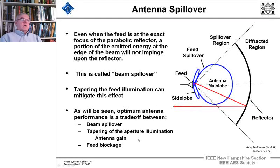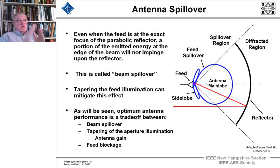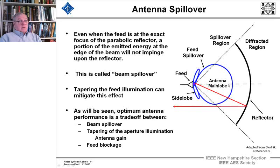The name of the game in antenna design is always tradeoff. You can't have everything perfect. You have a set of curves and you have to pick how to maximize performance. You've got beam spillover, tapering of aperture illumination which affects gain at the main beam tip, and feed blockage. You've got to balance all of those.